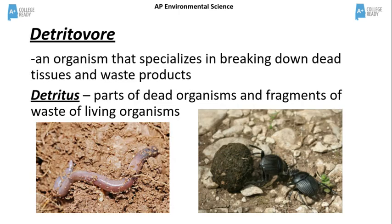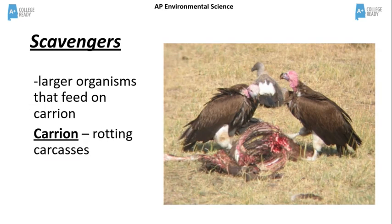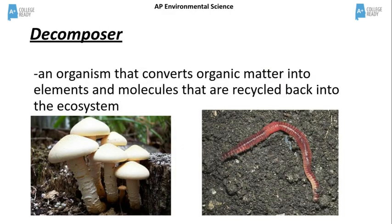Detritivores are a type of decomposer. They specialize in the decomposition of dead tissues and waste products. The organic materials broken down by detritivores are called detritus. It is usually parts of dead organisms and wastes of living things. Examples of detritivores include worms, beetles, and slugs. Scavengers feed on rotting carcasses called carrion. Examples of scavengers include vultures. The two categories of decomposers are fungi, such as mushrooms, and detritivores, such as worms.